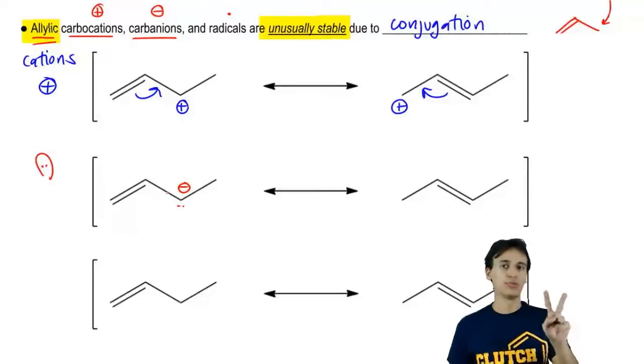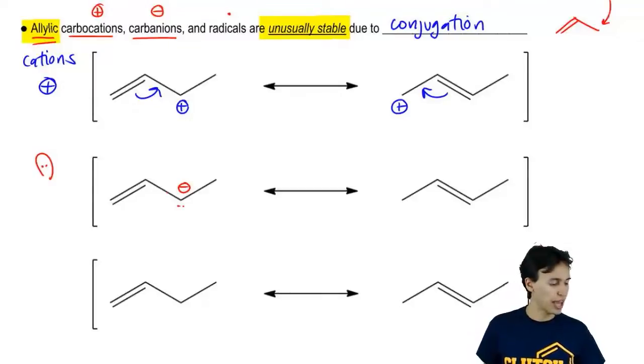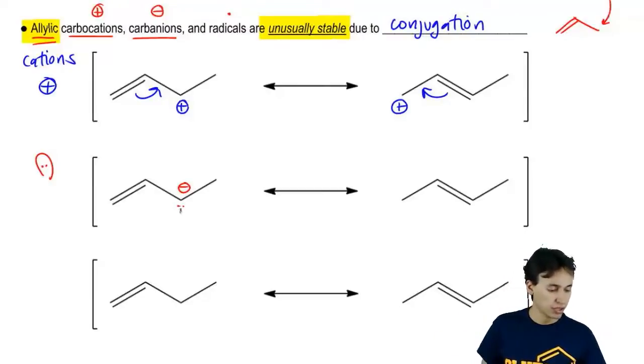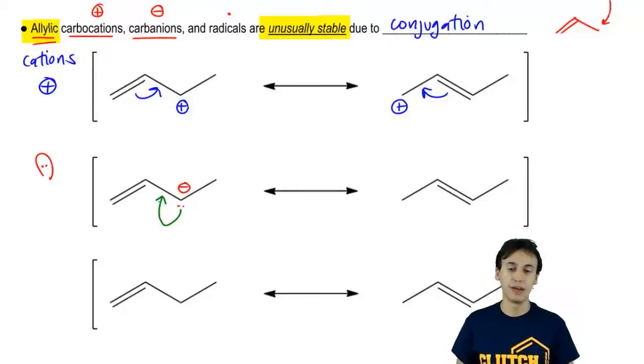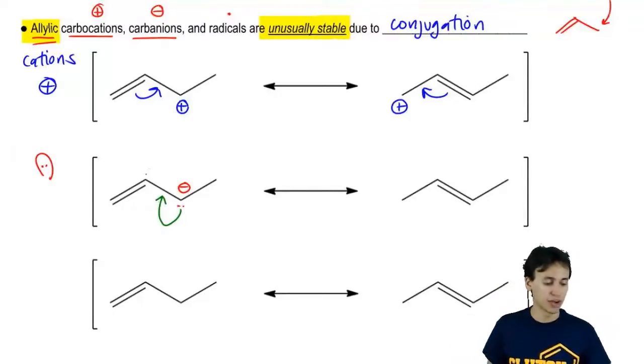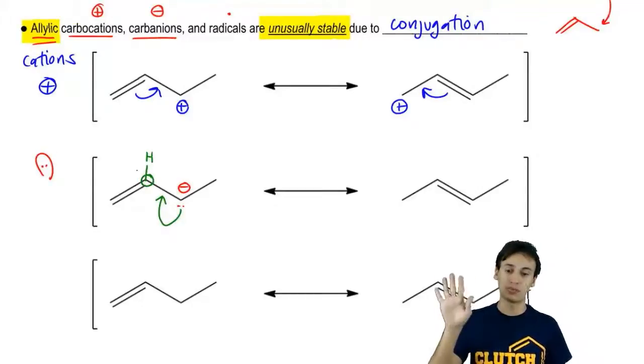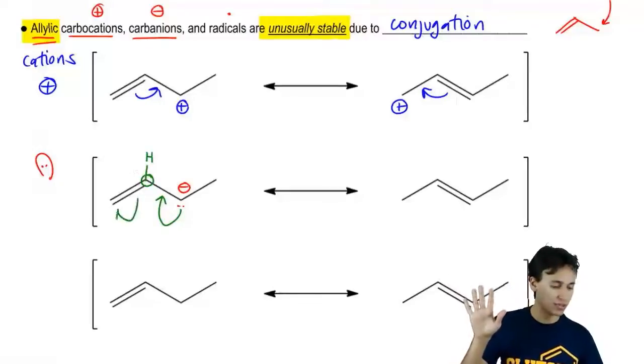We would actually start from the region of highest electron density just like any mechanism we've ever drawn. You would start off with these electrons moving towards the closest bond. Now if we make that bond, we have to break a bond because we're violating the octet of this carbon right here. It already had four bonds. We're about to make the fifth one. We have to break the bond.